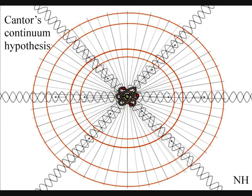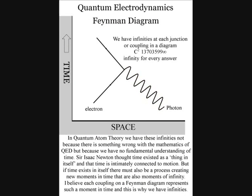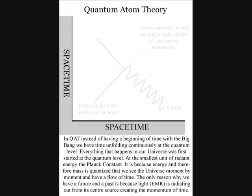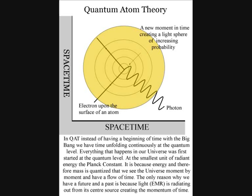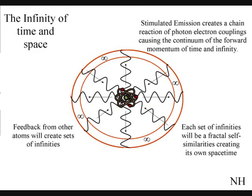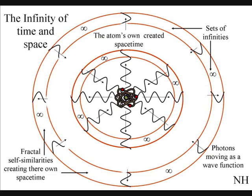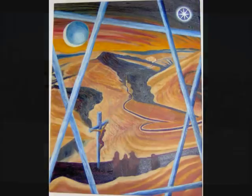This can explain the problem of mathematical infinities in quantum electrodynamics that can only be cancelled out in a process called renormalization. The calculations for each coupling on a Feynman diagram are infinite. In quantum atom theory, these infinities represent the continuous process of the time continuum, creating the infinity of space-time, and therefore there is no need for renormalization. In this diagram of an atom surrounded by photon-electron couplings, feedback from other atoms will create sets of infinities. The reason we can always divide infinity into sets of infinities is because of the continuous process of the wave-particle function collapsing into new quantum particles. Each set of infinities will be a set of fractional self-similarities, creating their own infinity of time and space.